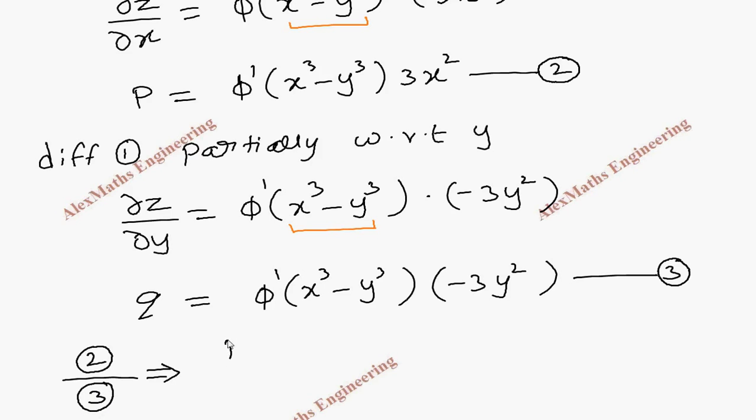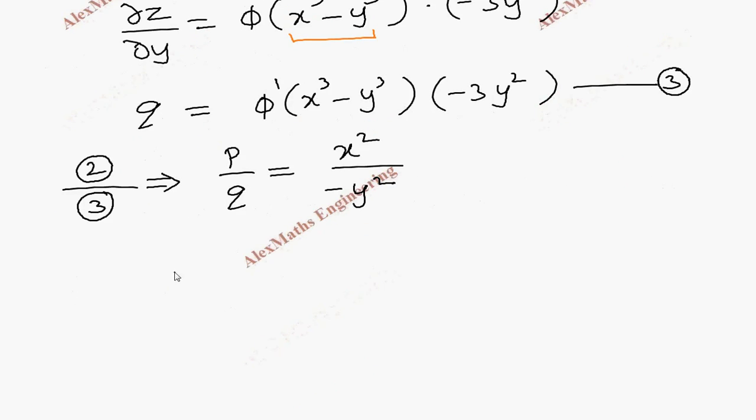So on the left hand side we have p/q and on the right hand side both the phi dash terms get cancelled, 3 also gets cancelled. So remaining is x² and here it is -y². By cross multiplying we get -y²p = x²q.